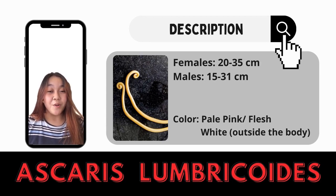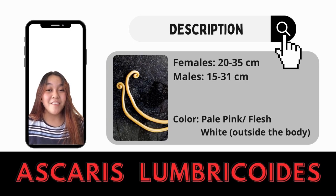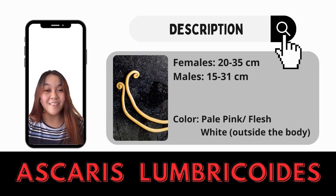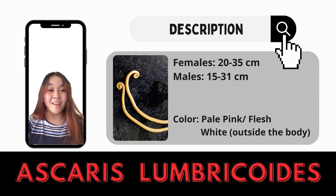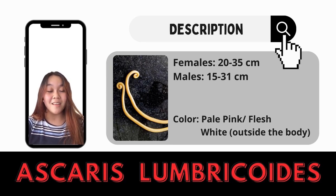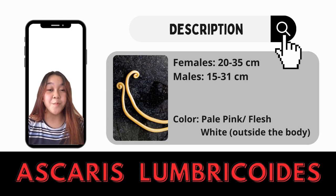So what is Ascaris lumbricoides? Ascaris lumbricoides is the largest nematode parasite found in the human intestine. Females are 20 to 35 centimeters long and males are 15 to 31 centimeters, which means females are longer than males. But the males have a distinct feature of being a large cylindrical worm with tapering ends. The anterior end of Ascaris lumbricoides is more pointed than its posterior end.